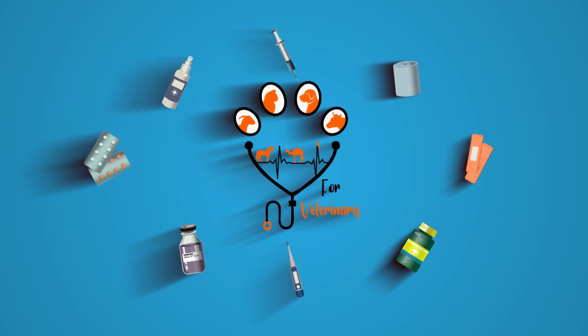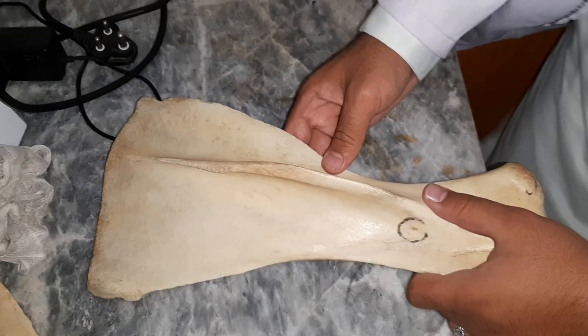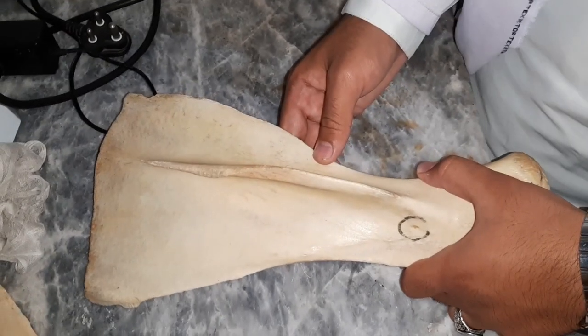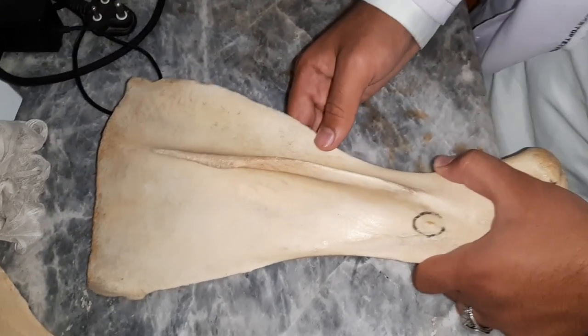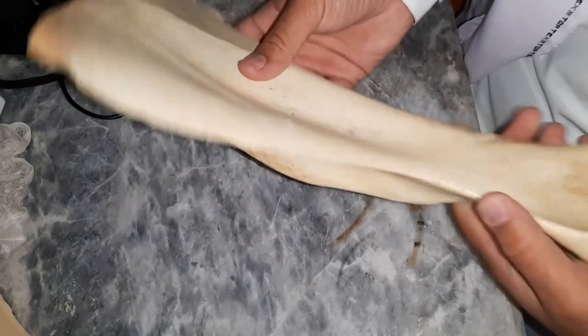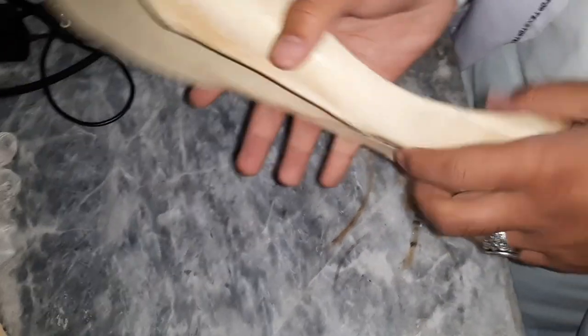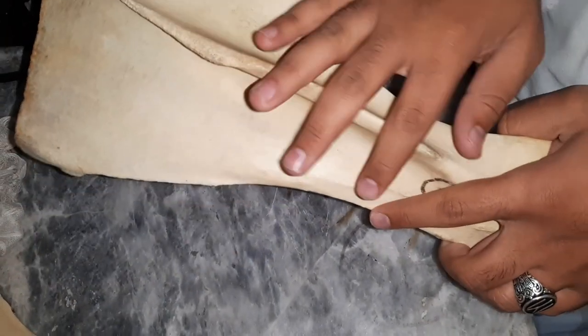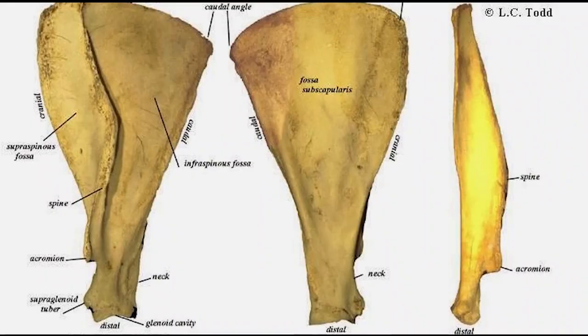Welcome to our YouTube channel. Today I'm going to discuss the scapula of the horse. It has two surfaces: the medial surface and the lateral surface. First of all, we need to determine whether it's a right or left scapula.